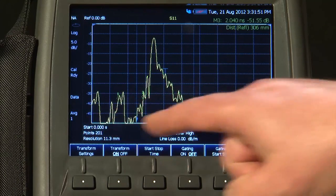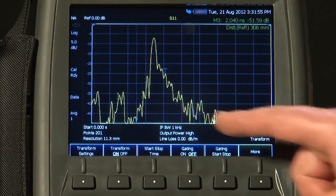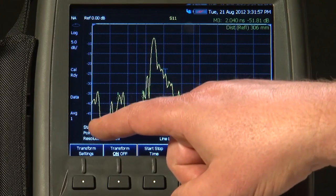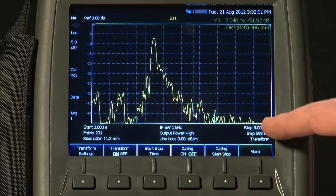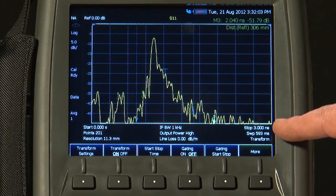But on the X axis, instead of sweeping frequency, we are now displaying time, starting at 0 seconds on the left-hand side of the display and 3 nanoseconds on the right-hand side.